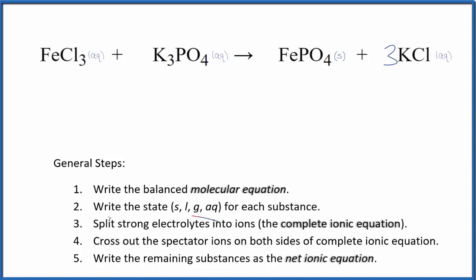Now we can split the strong electrolytes into ions for the complete ionic equation. Iron's a transition metal, so if we look to the chlorine here, this chloride ion, each one will be 1 minus. So we have 3, this has to be 3 plus. So we'll have our iron 3 ion, Fe3 plus, and I'll write the states later.